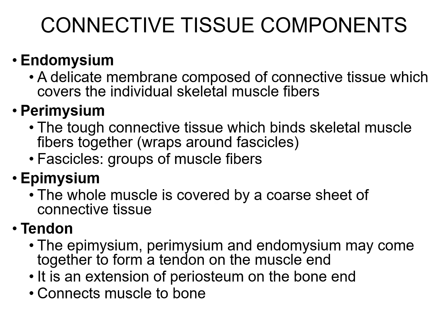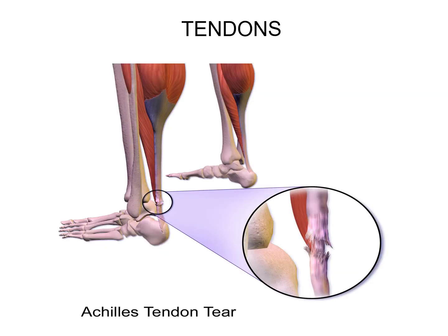Just some terms we've already talked about: the endomysium covers the individual muscle cell, the perimysium is around the fascicles, and the epimysium is around the whole muscle. A tendon is mainly made up of dense regular tissue — collagen fibers — connecting a muscle to a bone, unlike a ligament which is bone to bone. Here's a picture of the calcaneal tendon, also known as the Achilles tendon, where the gastrocnemius and soleus muscles connect to the calcaneus bone — literally fulfilling the definition of connecting muscle to bone.